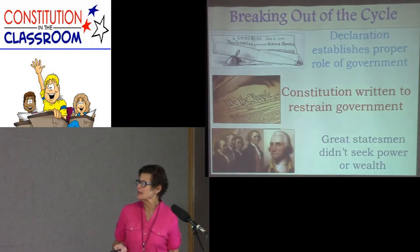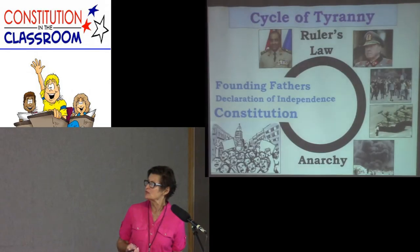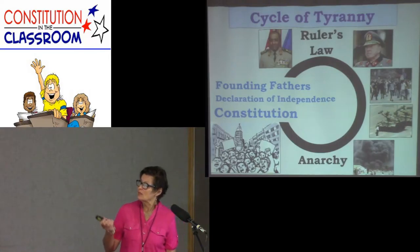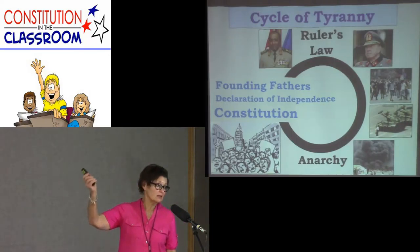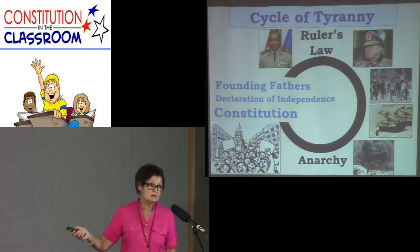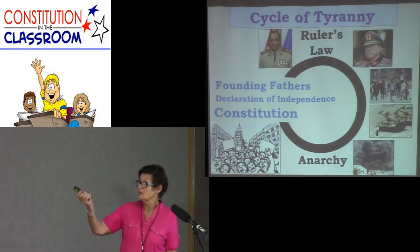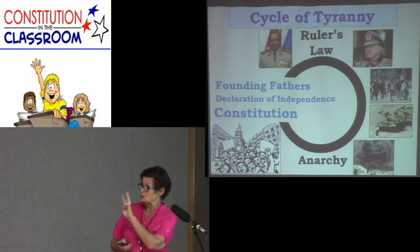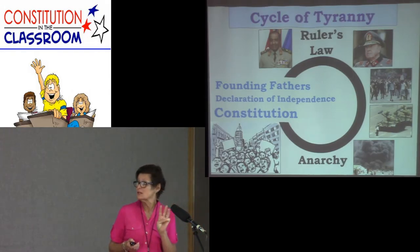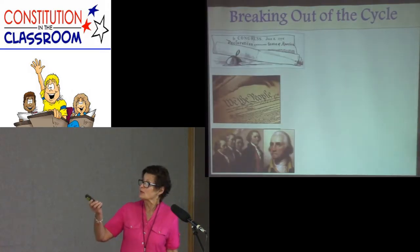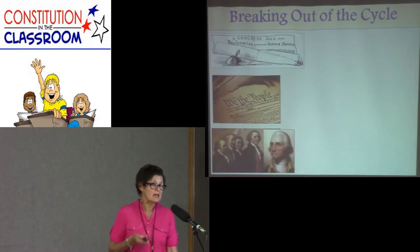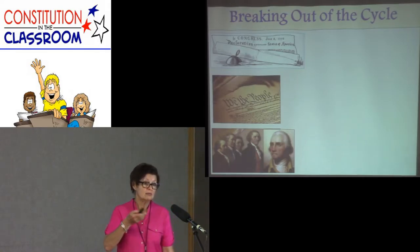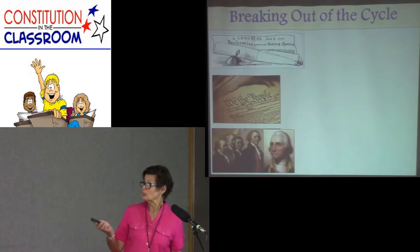Going back to the cycle of government — this is a very important cycle. This is how the Founding Fathers broke that cycle of government, and that's why we have a different government. There were three factors: the Founding Fathers themselves, the Declaration of Independence, and the Constitution. They actually broke that cycle in 1787 when we got the Constitution.